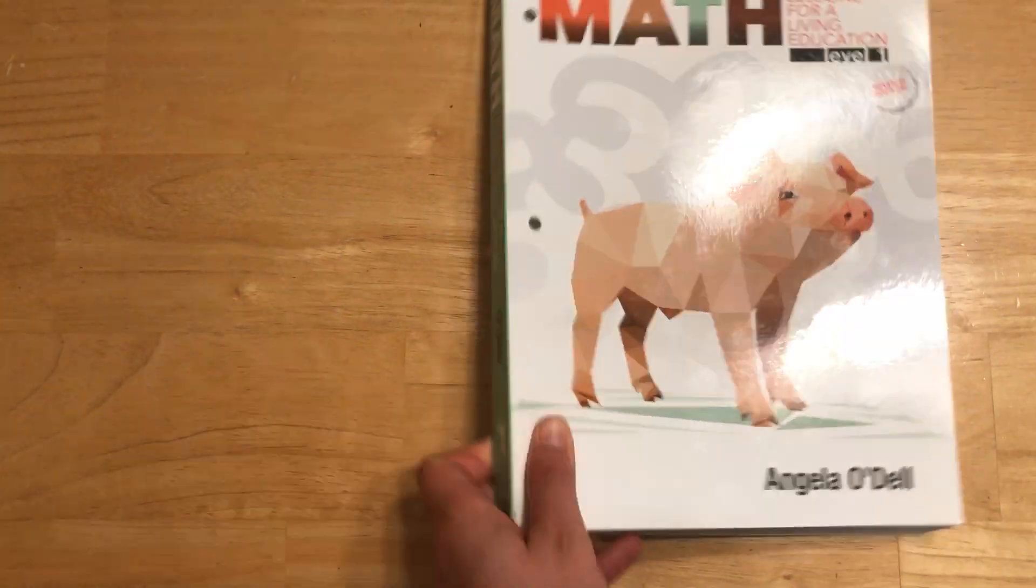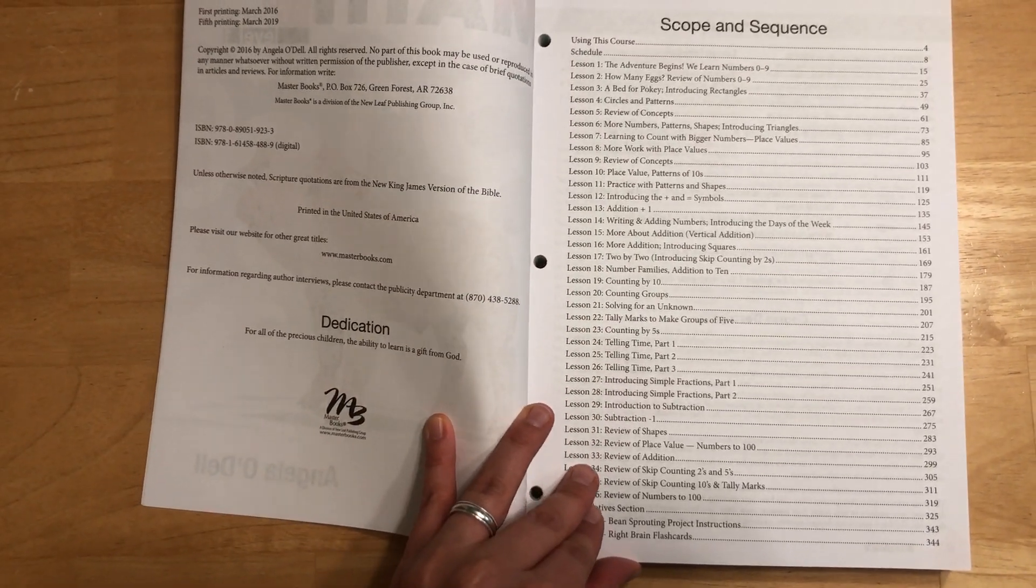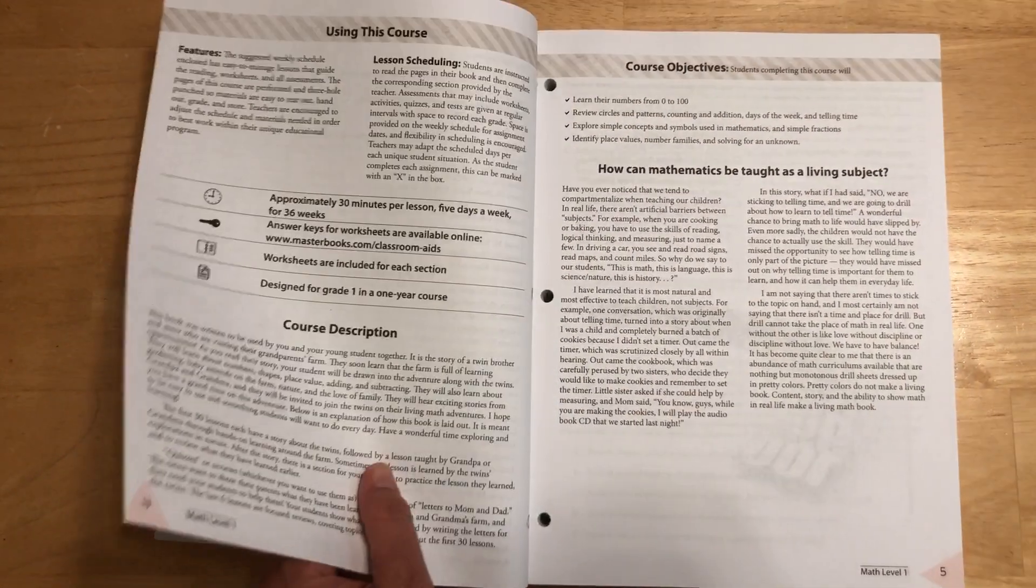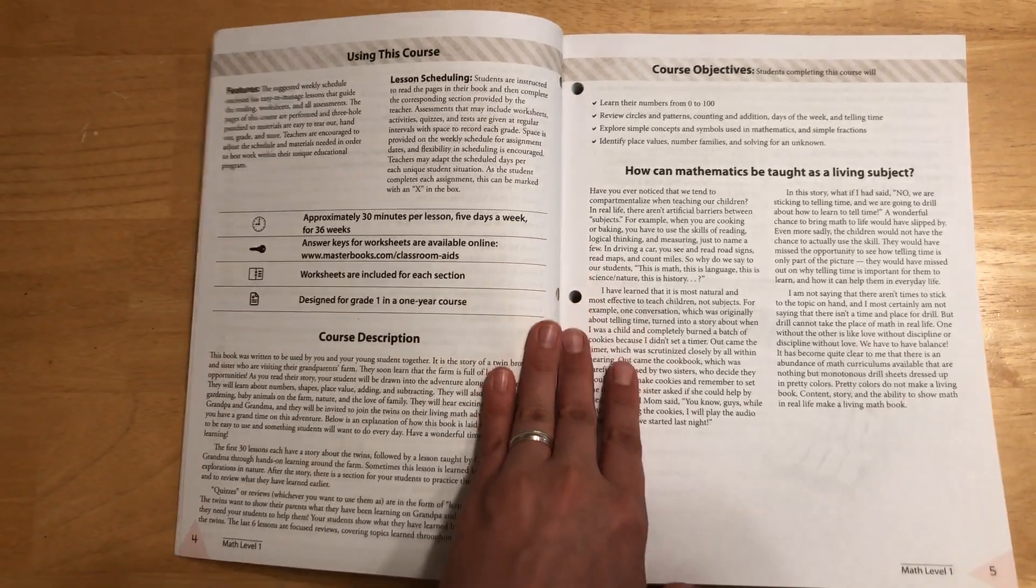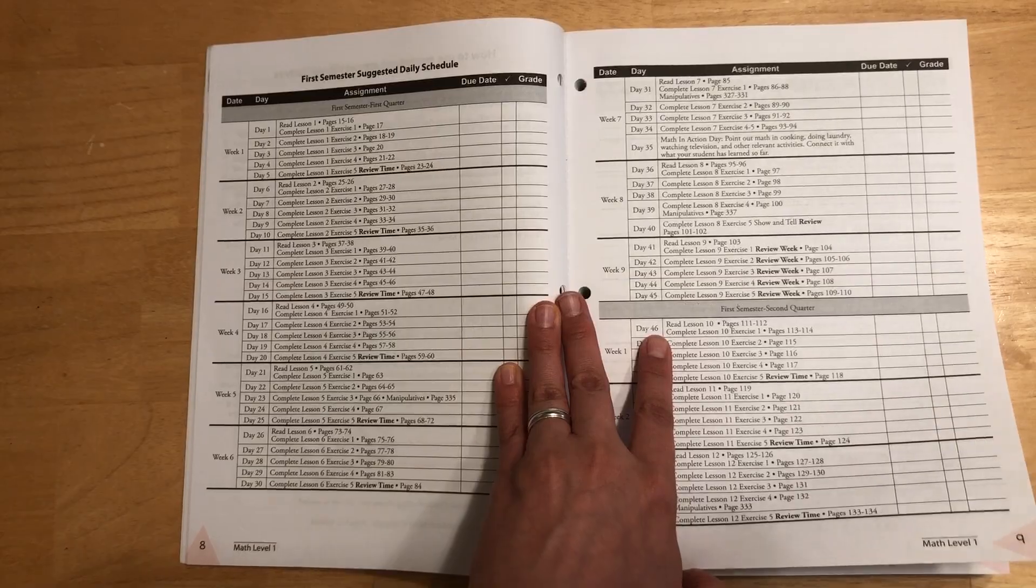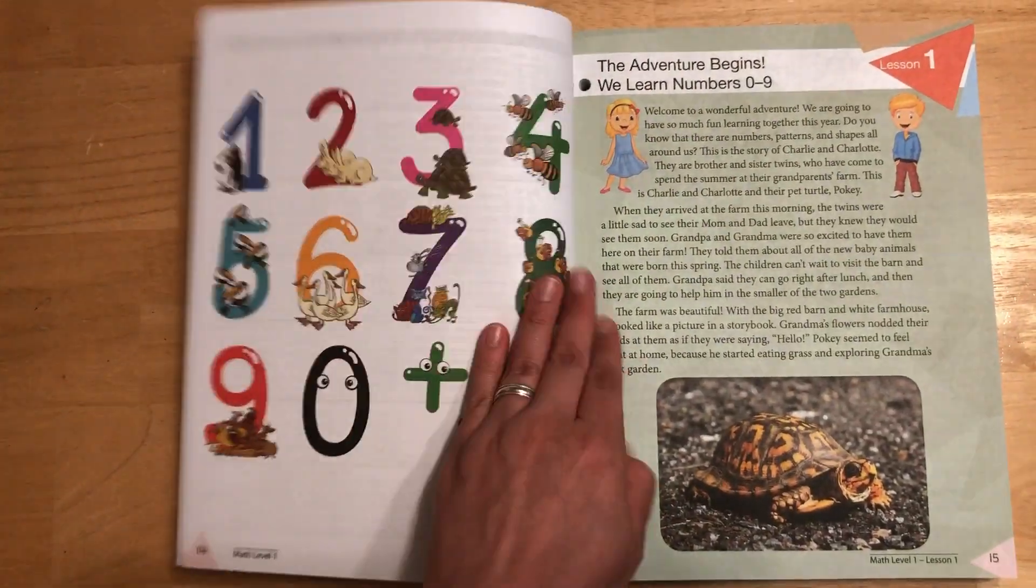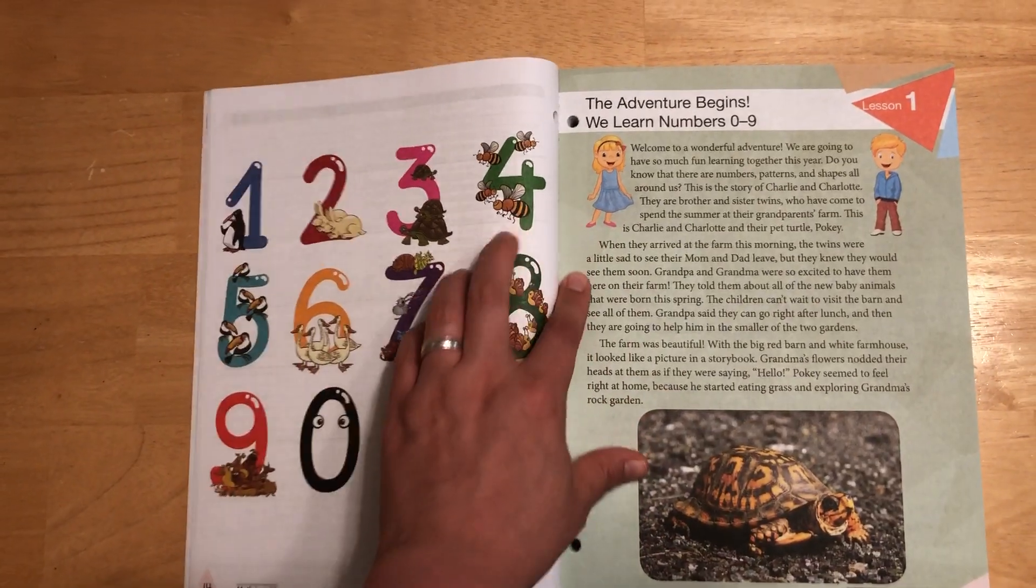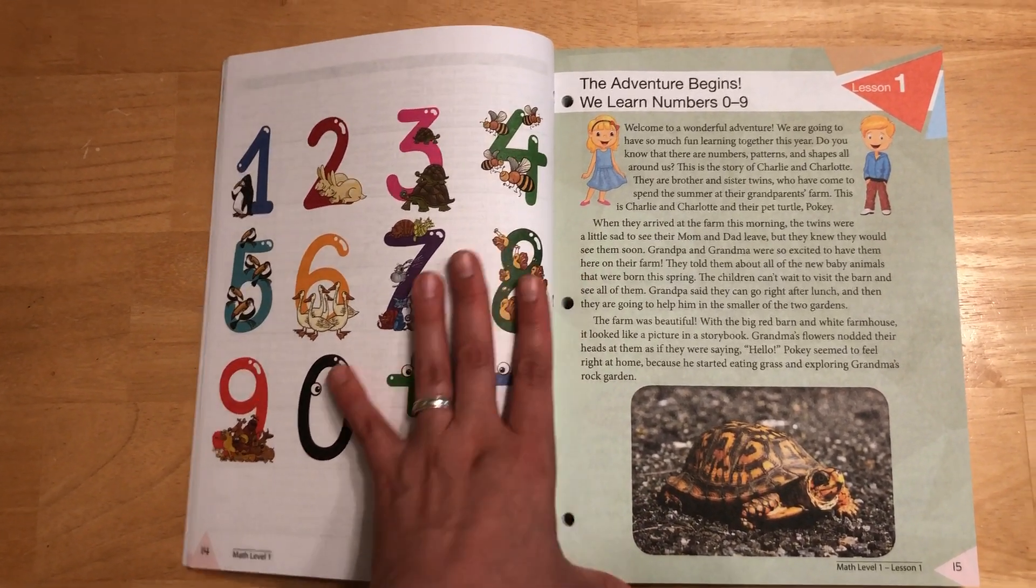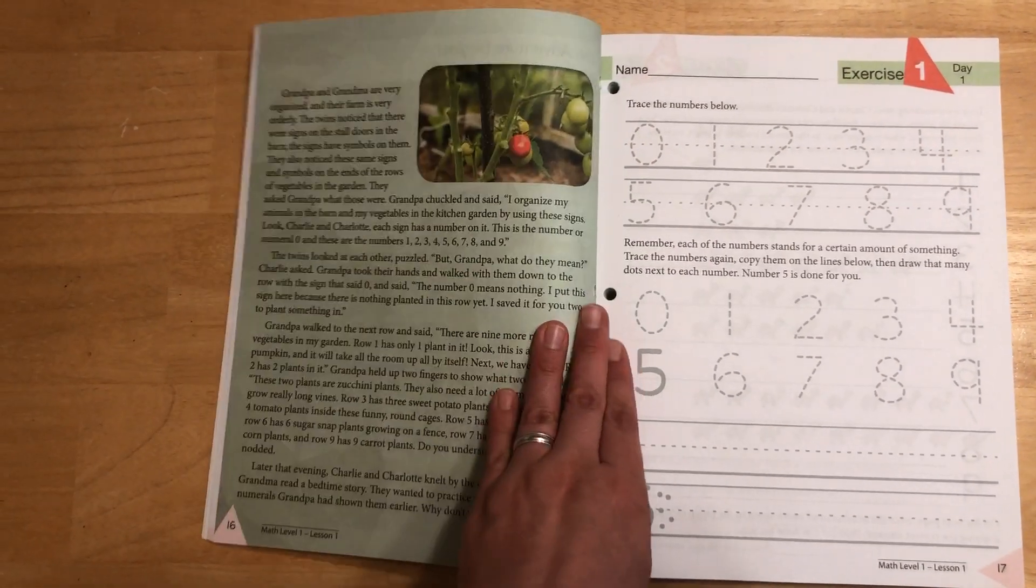It is a workbook. It's got holes punched there. Here is the scope and sequence and you can see all the different lessons that are covered. This is a very Charlotte Mason type curriculum. It is story based and teaches math through stories. Here's your intro stuff, suggested schedule for the first semester, second semester, etc. Basically the whole entire book is this one long story broken up into chunks about these two twins, Charlie and Charlotte. They're spending the summer at their grandparents' farm. So each story or each chapter has a little story about them and then some lessons that go along with it.